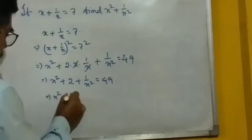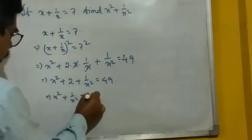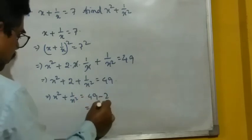So it will be x square plus 1 by x square equal to 49 minus 2. It will be 47.